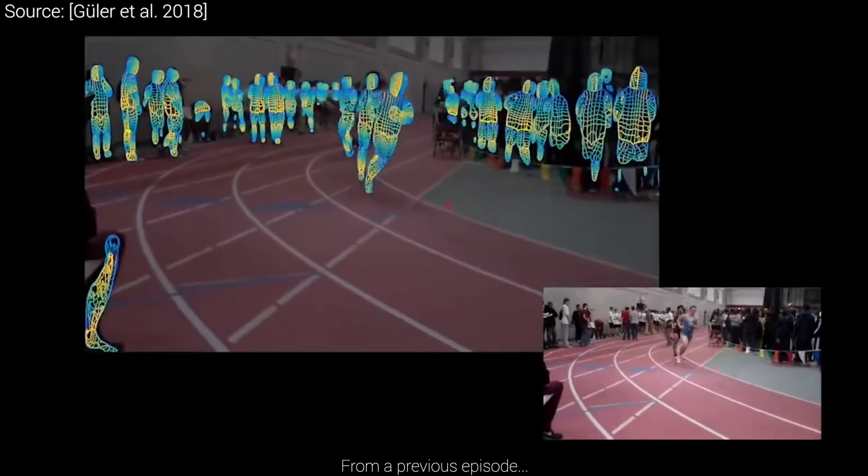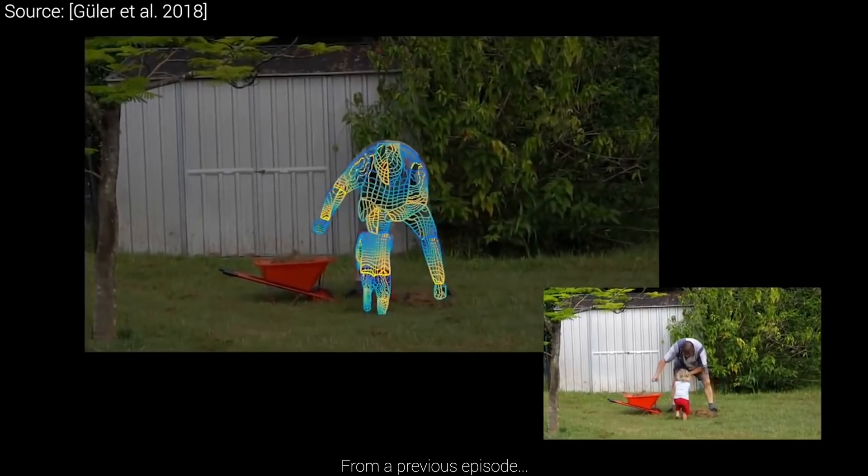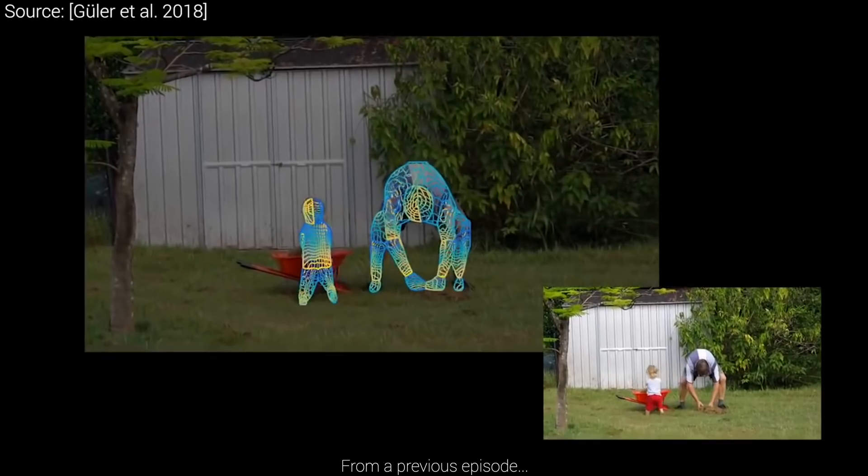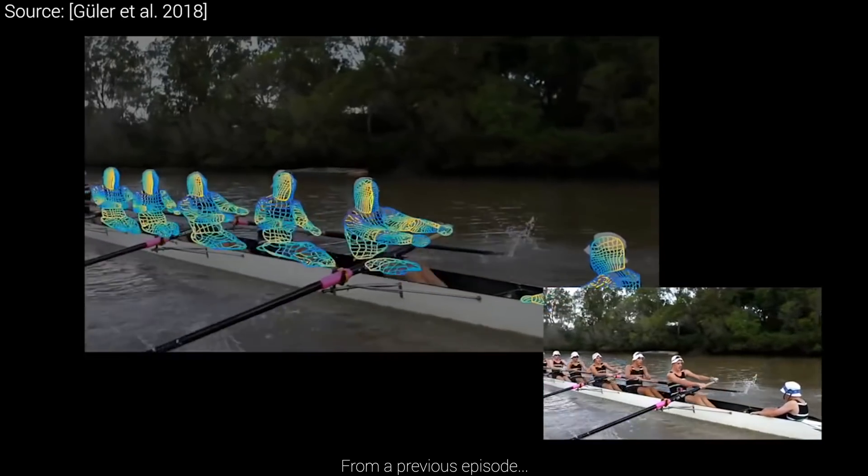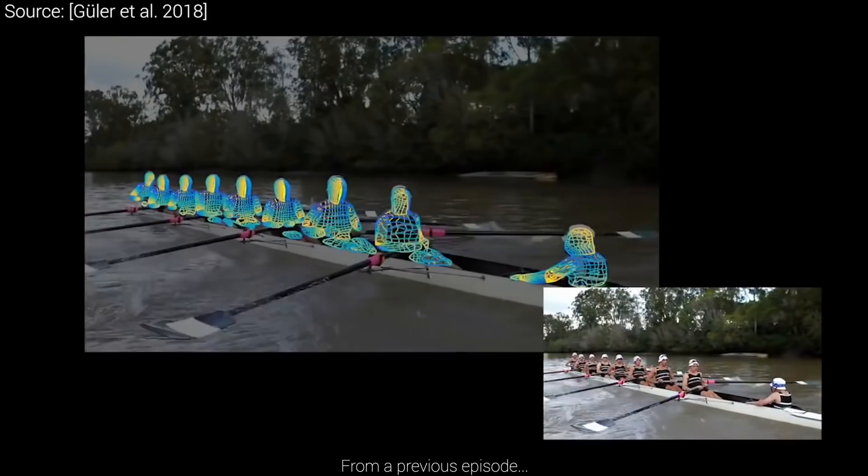Pose estimation means that we have an image or video of a human as an input, and the output should be this skeleton that you see here that shows what the current position of this person is.